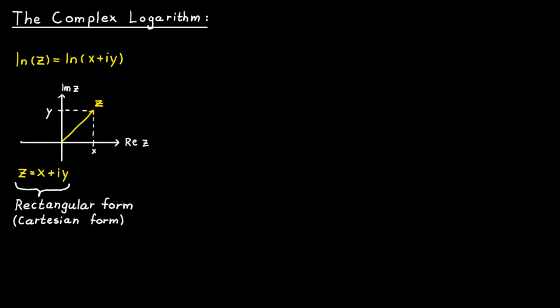But we can also represent a complex number by its length, the absolute value of a complex number, and some angle, which we are going to call alpha.